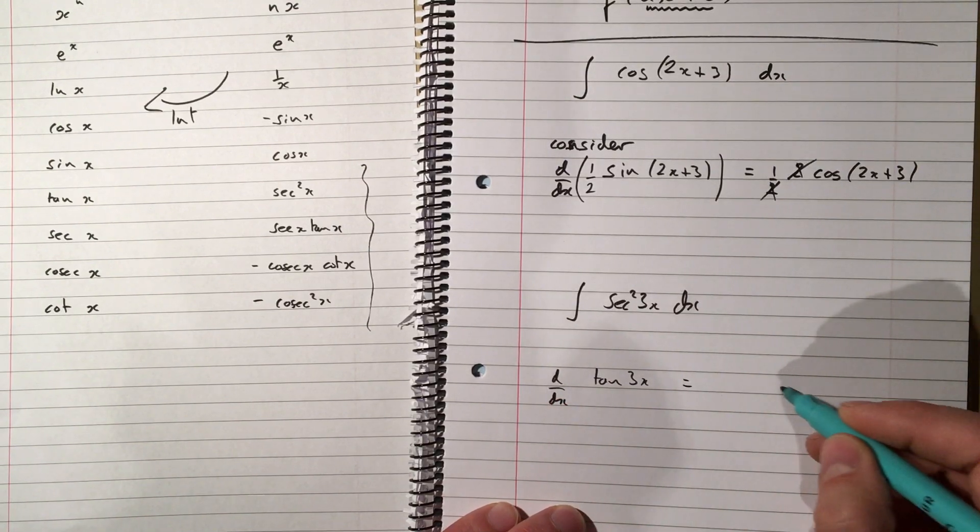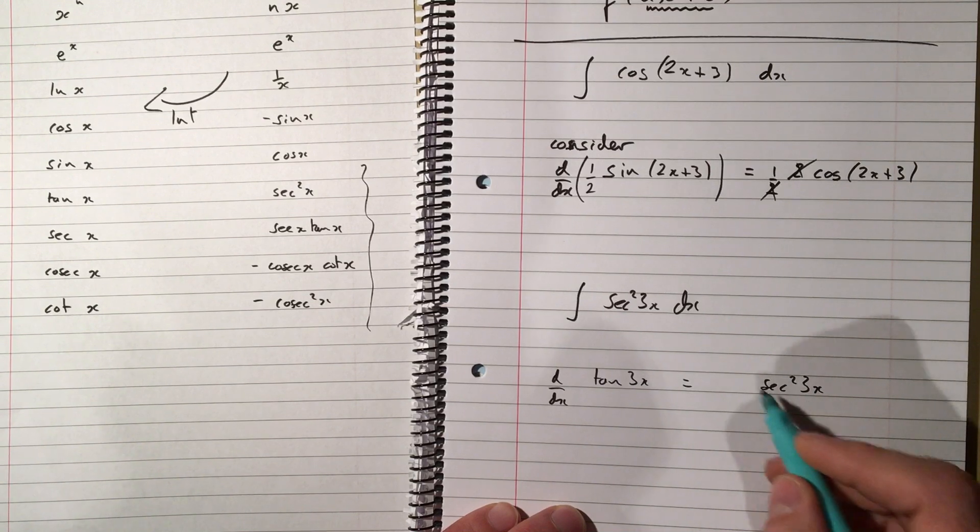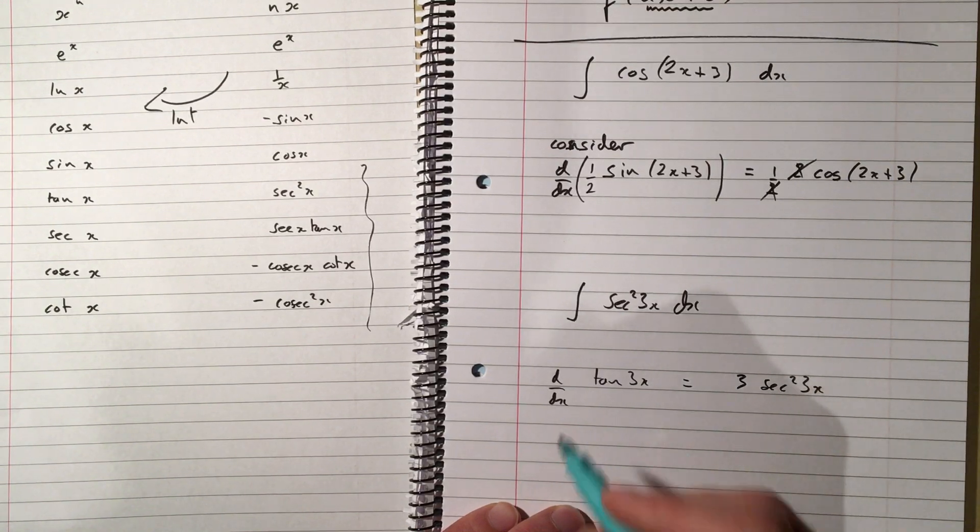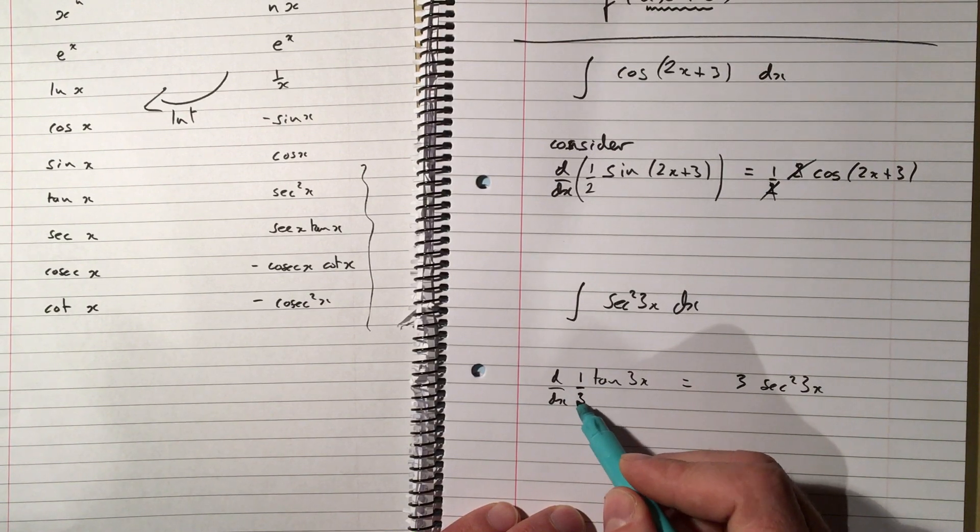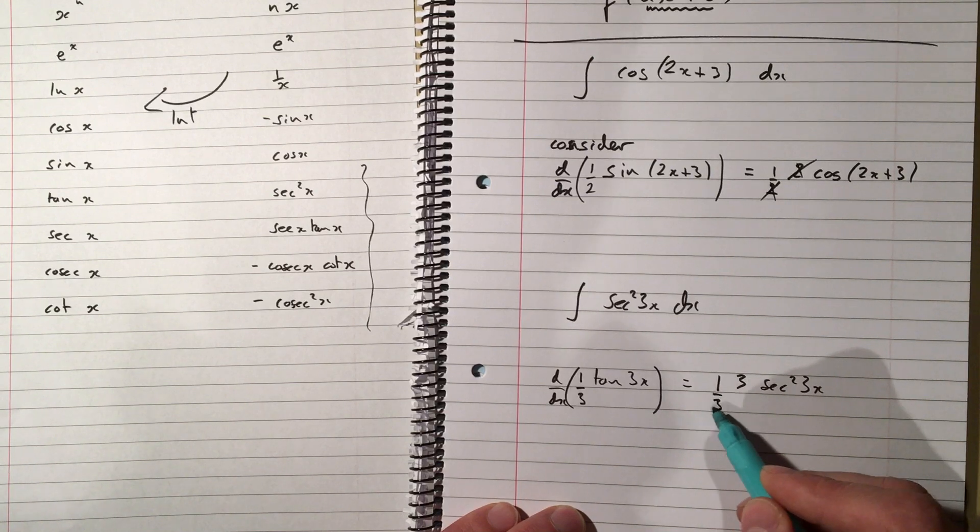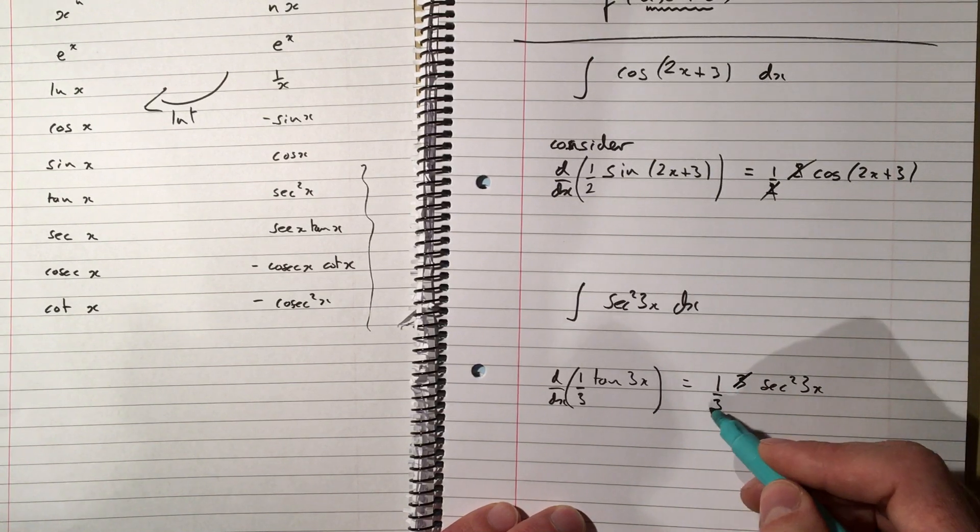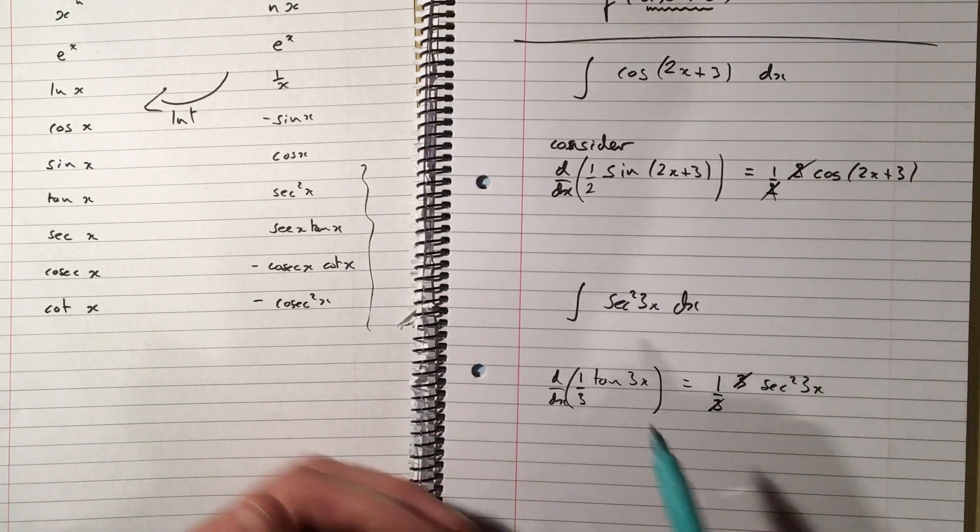And the derivative of tan of 3x is sec squared of 3x times by 3. And then I need to fix this 3. So if I, instead of differentiating tan of 3x, I differentiated one-third of tan of 3x, then I would get one-third of sec squared of 3x. The 3's would cancel out, and the derivative of that thing in the brackets is this thing here. That's the way I like to do it.